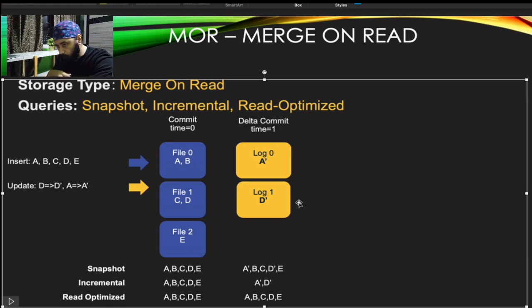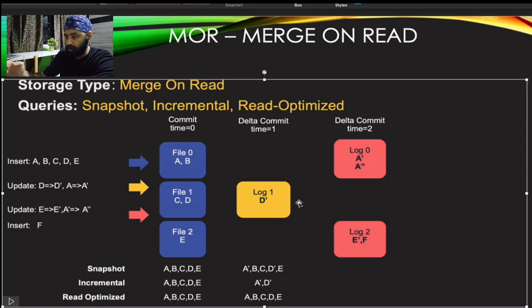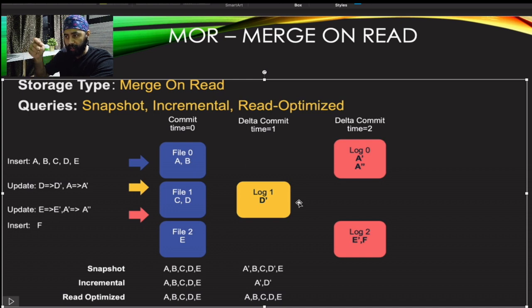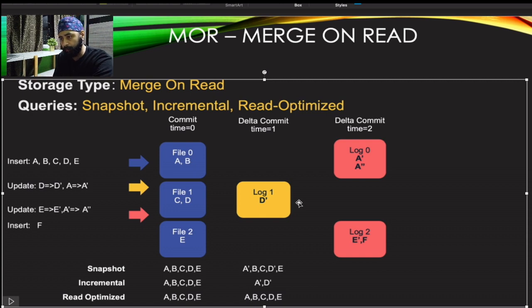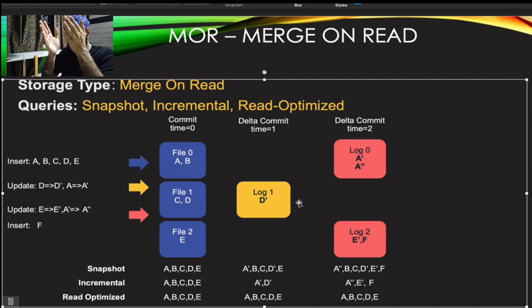At time two in Merge on Read, another update occurs: A-dash to A-double-dash, E to E-dash, and a new insert F. Hoodie adds one more entry to the existing log file for File 0, tracking A-dash to A-double-dash. For File 2, it creates a new log file tracking E to E-dash and the new record F. Log 1 is not touched because D in File 1 was not updated again. Snapshot query returns the latest merged result; incremental returns what changed; read-optimized still returns the old file data.